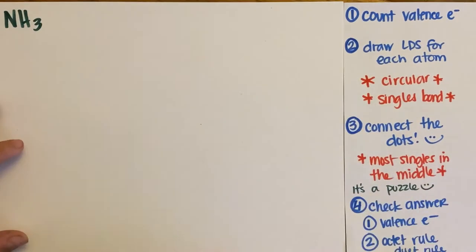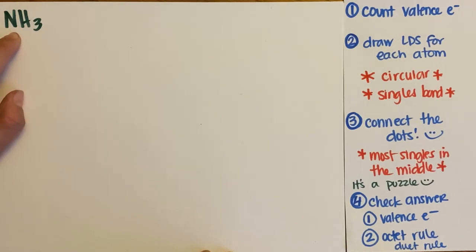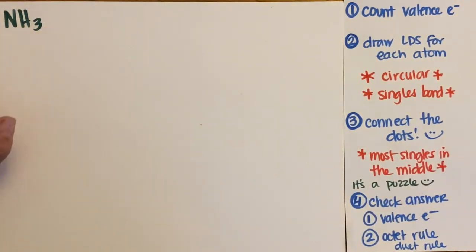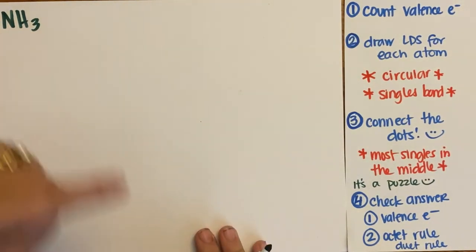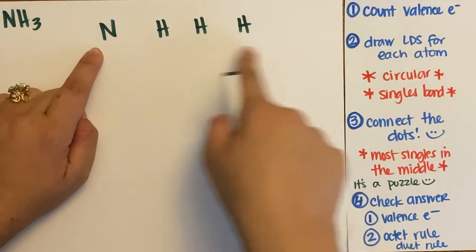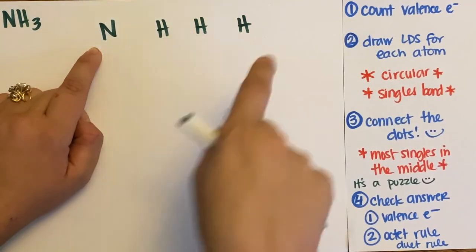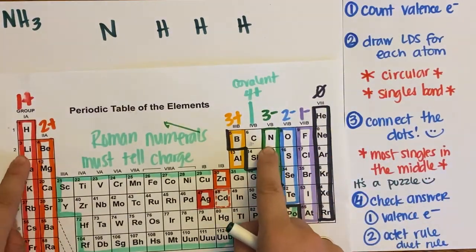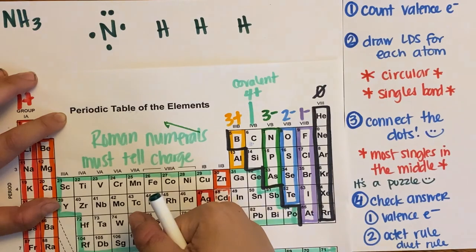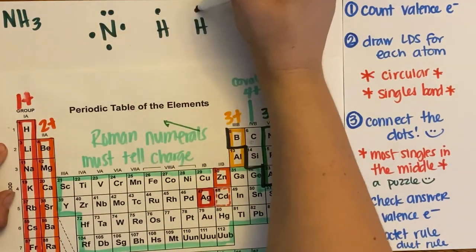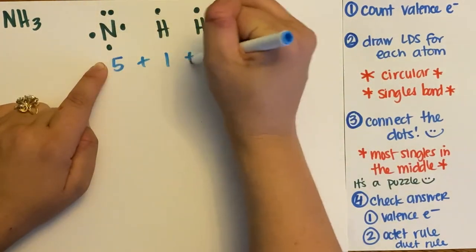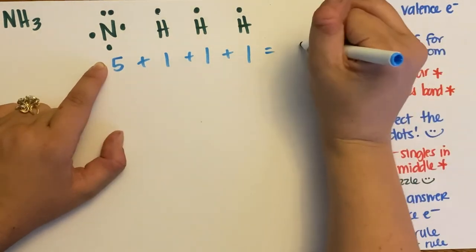Let's do NH3 — that's ammonia, found in a lot of cleaning products. Count your valence electrons: nitrogen should have five, and I draw it in a circle — one, two, three, four, five. Then each hydrogen has one — one, one, and one. I'm starting with five plus one plus one plus one, which means I start with eight valence electrons, so I better end with eight.